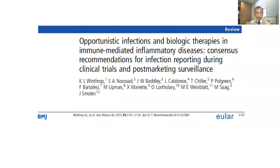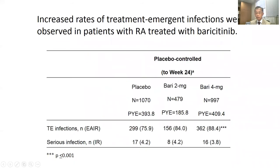So let's glance at the main results. Increased rates of treatment emergent infections were observed in patients with RA treated with baricitinib. Exposure-adjusted incidence rates per 100 patient-years were 76 for placebo, 84 for baricitinib 2 mg, and 88 for 4 mg baricitinib, with P-value ≤0.001. The incidence rate of serious infection was similar for baricitinib and placebo.